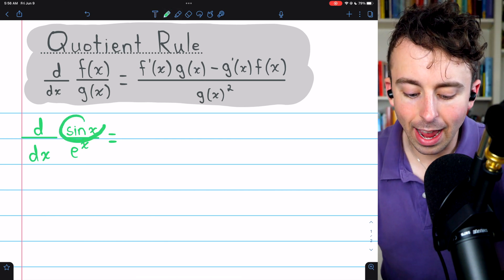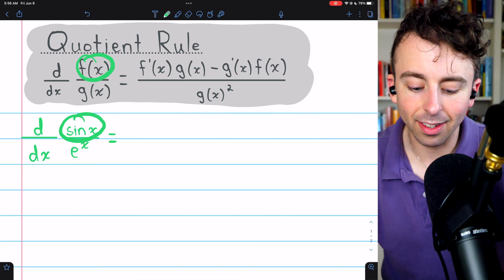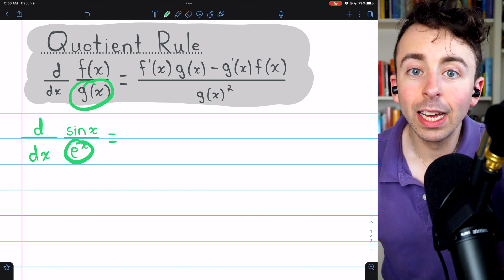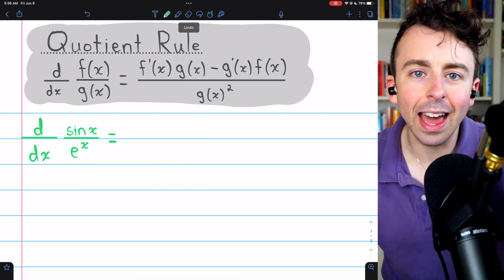Now in our problem, sin x is f, because that's the numerator, and e to the x is g, because that's the denominator. Let's apply the formula and see what we get for the derivative.